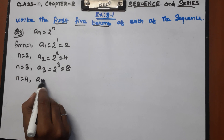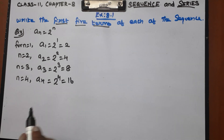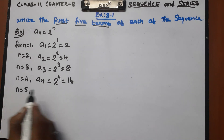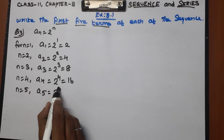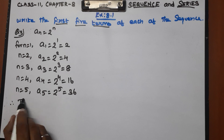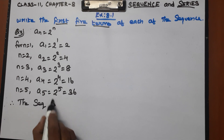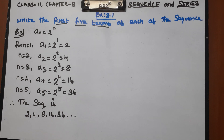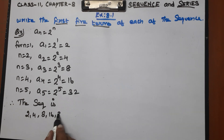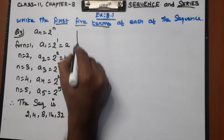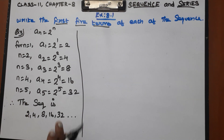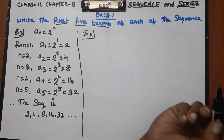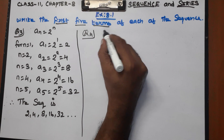For n equal to 4: a4 equals 2 to the power 4, that is 16. For n equal to 5: a5 equals 2 to the power 5 equals — sorry, not 36, it is 32. So 2 to the power 5 is 32. Therefore the sequence of the given nth term is 2, 4, 8, 16, 32. This is the answer.